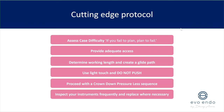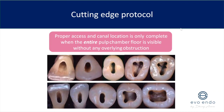Proceed with the crown-down pressureless sequence — I use touch-controlled activation. Inspect your instruments frequently and replace when necessary. If you don't see a file distorting, how will you know if it's going to break? Ask yourself how many times you've looked at a file before introducing it to make sure it's not distorted. I do it every single time — it will save you a separated instrument. We all love to blame the file, but most of the time it's applying too much pressure or not evaluating files throughout the process. Proper access and canal location is only complete when the entire pulp chamber floor is visible without any overlying obstructions.